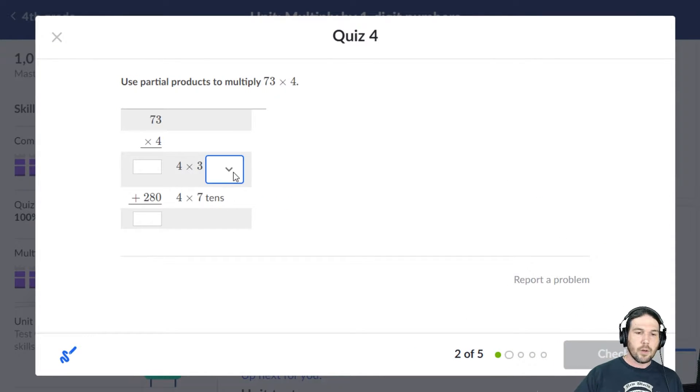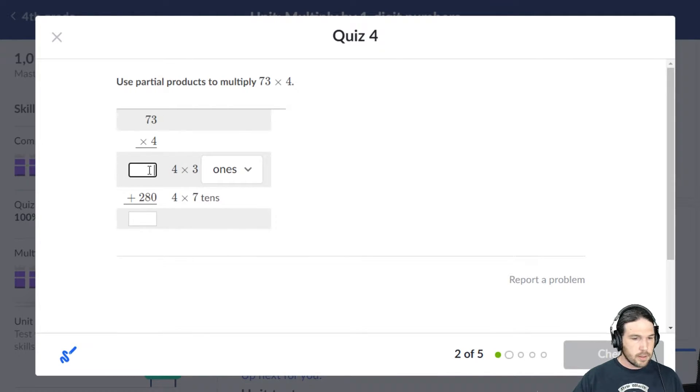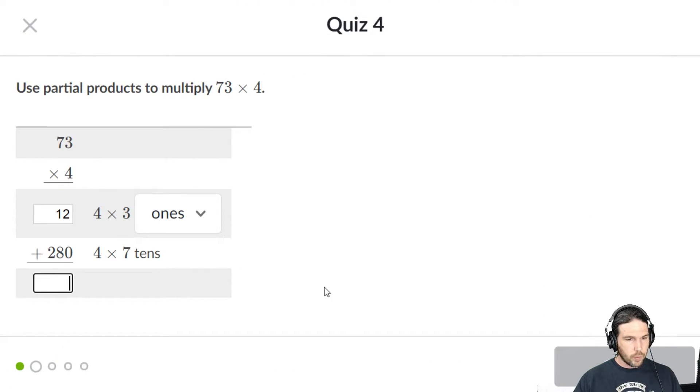Partial products. Well, let's see. I know that 4 times 3 is 12 because that is 3 ones, right? And then 280 is 4 times 7 tens. So with partial products, we end up, let me zoom in a little bit, with 292.